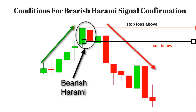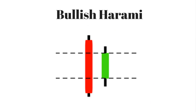Conditions for bearish harami signal confirmation — first condition: it should be formed after an uptrend. Second condition: a larger bullish candle followed by a bearish candle that is completely inside the range of the bullish candle. Third condition: after bearish harami formation, the trader should mark the last close or the midpoint of the first white body, whichever is lower. Next trading day, if it breaks the marked level, go for short and place stop loss above the bullish candlestick high.